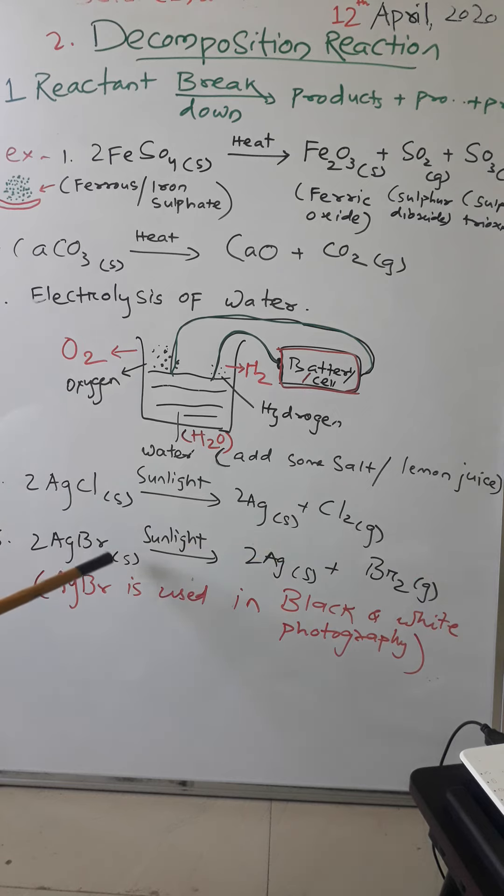Next one is silver bromide. Silver bromide also, again, if you keep it in sunlight, it gives us silver and bromine gas. It is also written that silver bromide is used in black and white photography.